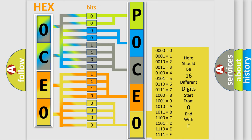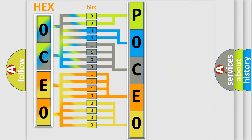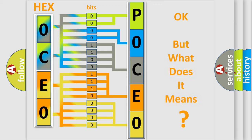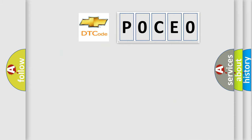We now know in what way the diagnostic tool translates the received information into a more comprehensible format. The number itself does not make sense to us if we cannot assign information about what it actually expresses. So, what does the diagnostic trouble code P0CE0 interpret specifically for Chevrolet car manufacturers?